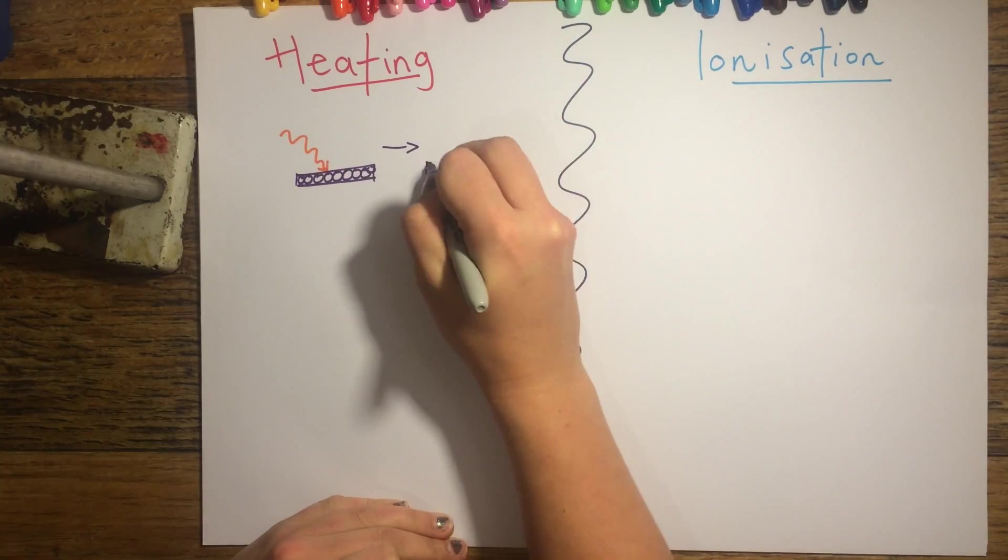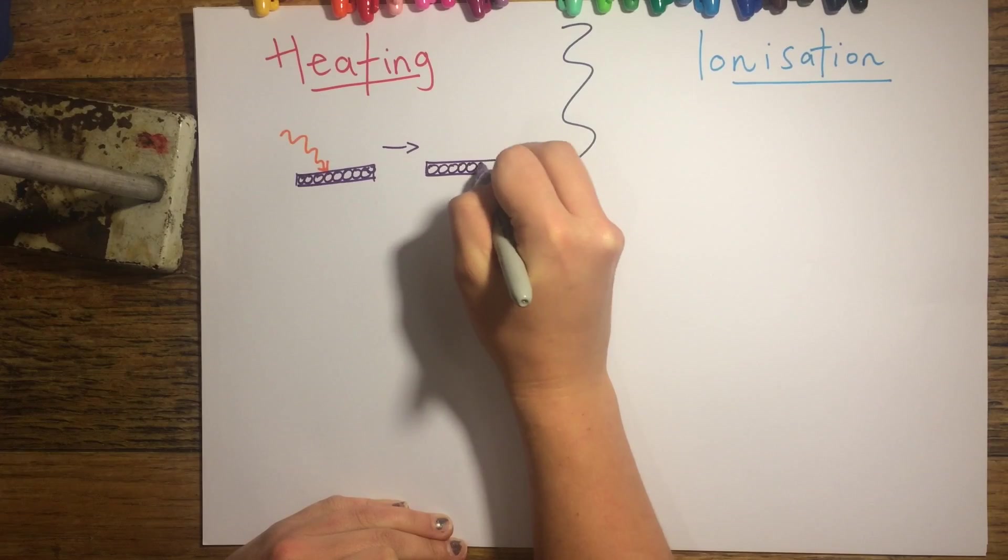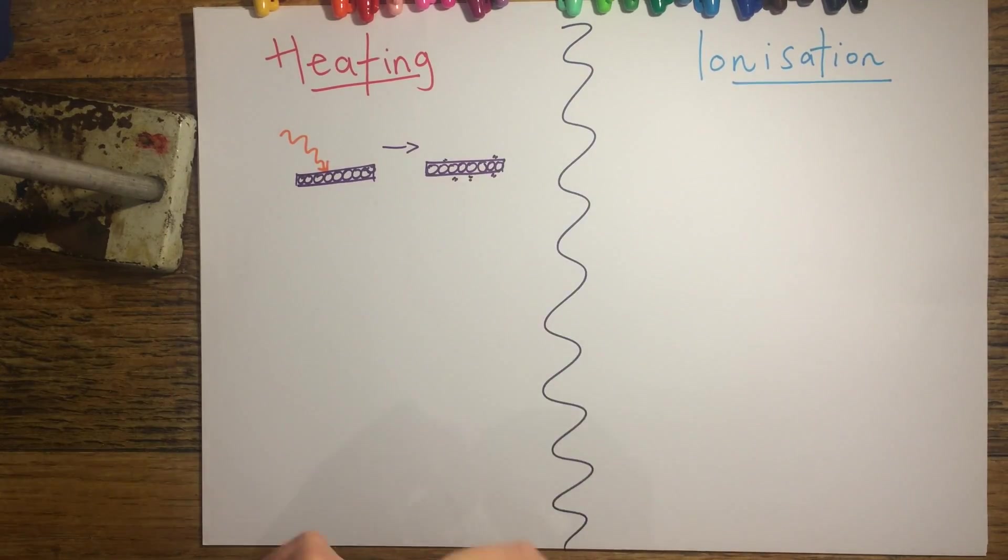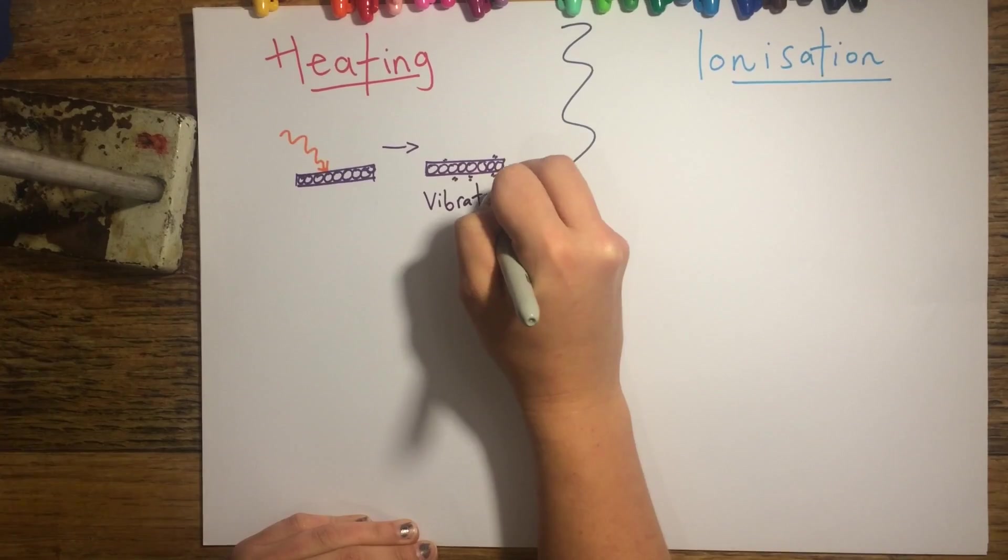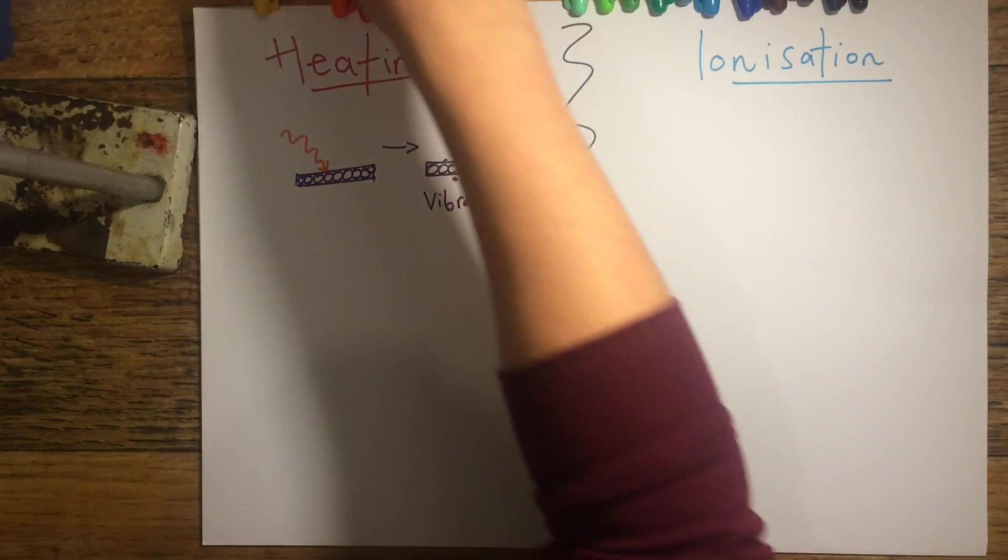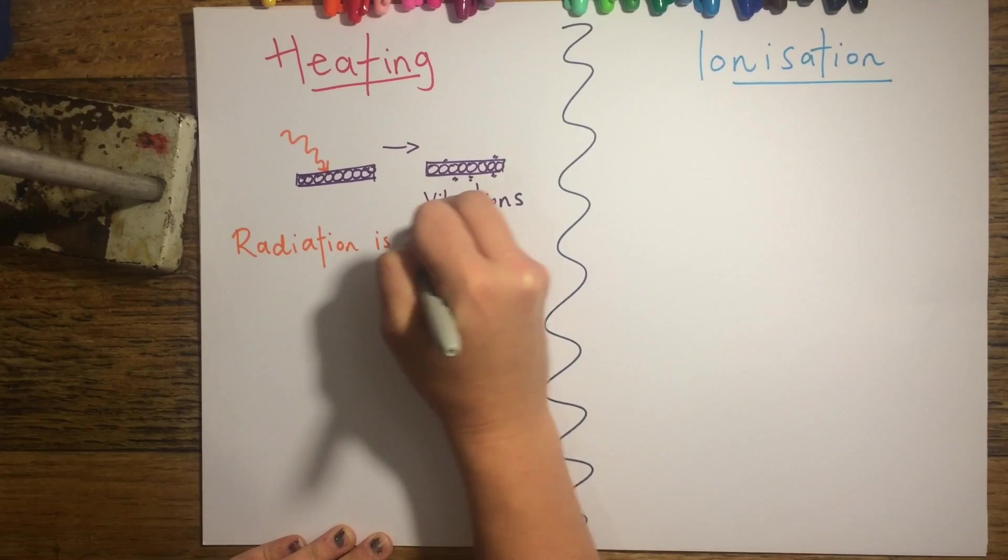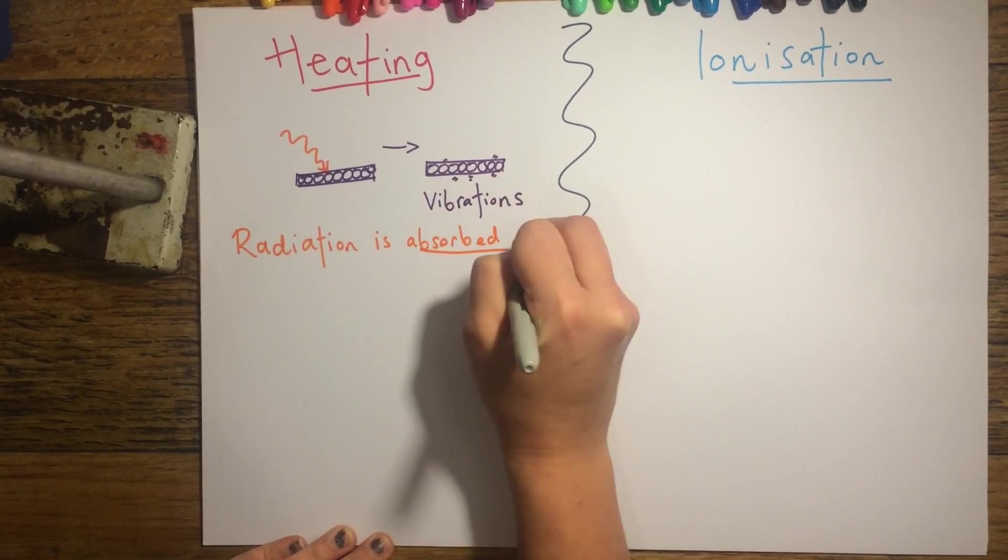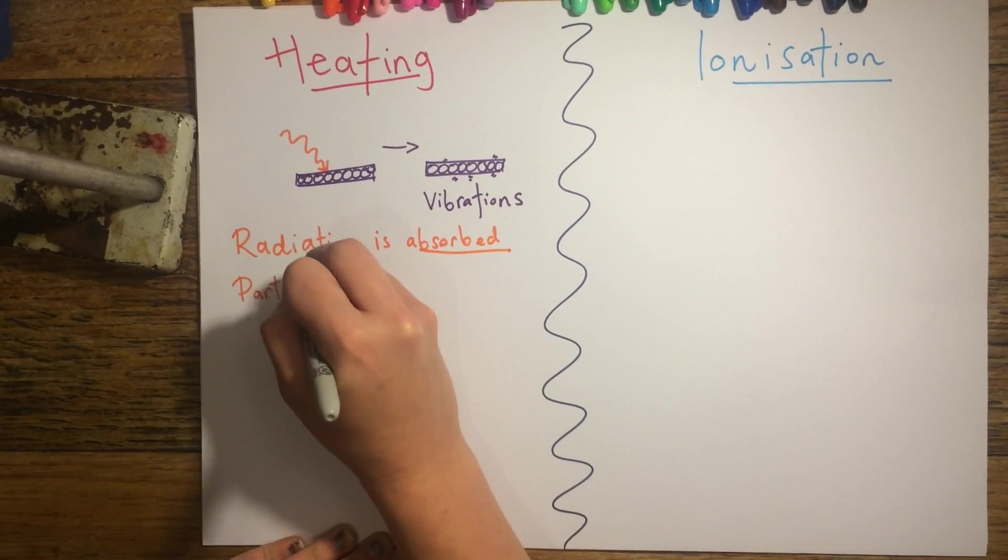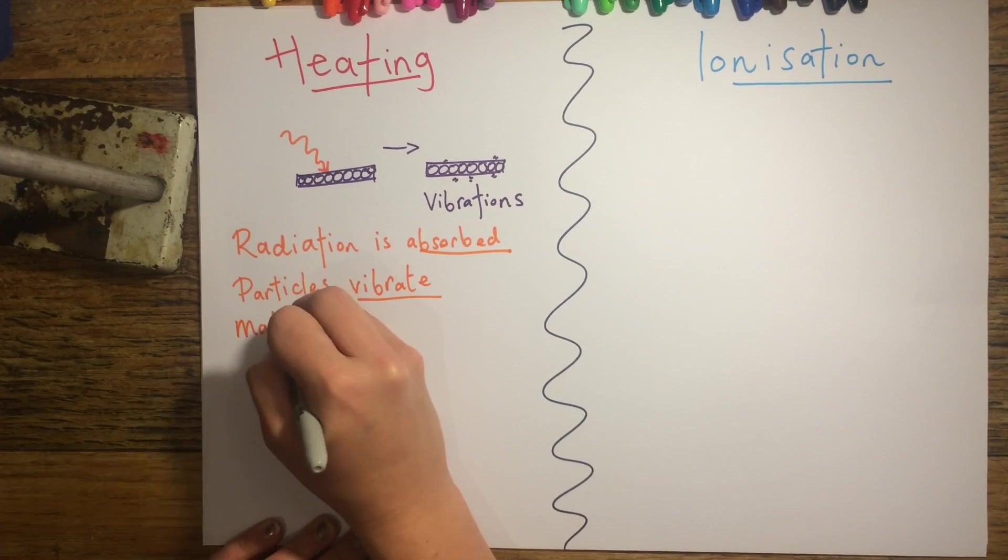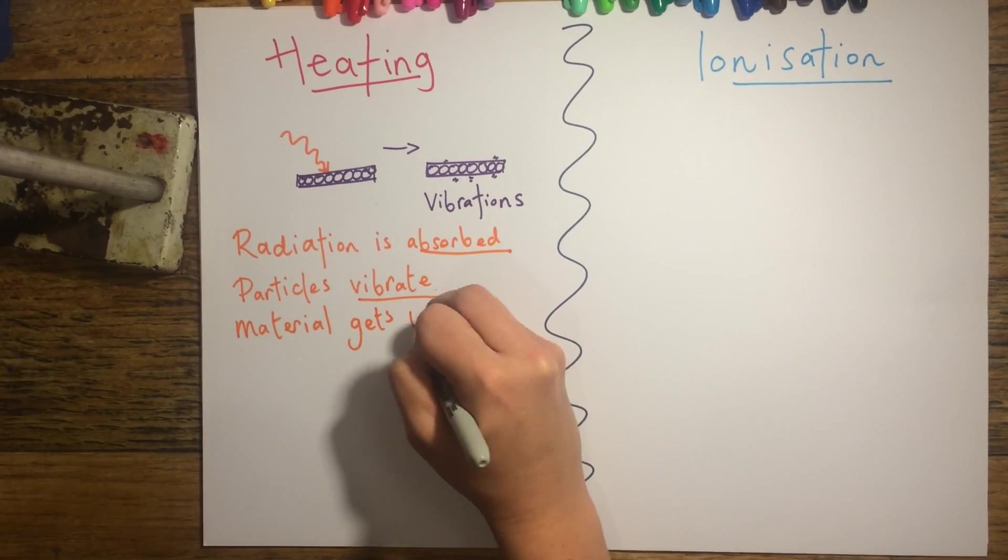We're going to look at what happens when there is radiation directed towards a material and what effect this has on the atoms that make up this material. If we consider these photons that are being directed towards the atoms, the radiation is going to be absorbed and this is going to make the atoms vibrate, and the effect is that the material is going to get warmer.